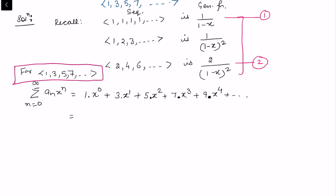Looking at equations 1 and 2 closely, if I subtract them component-wise, I get the desired sequence — equation 3. Let's see how: compute 2 minus 1, i.e., subtract sequence 1 from sequence 2.